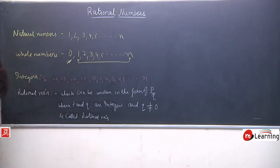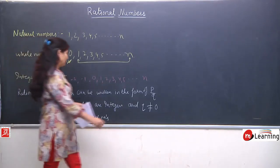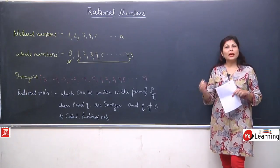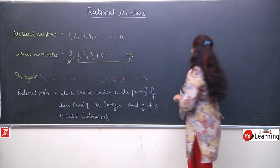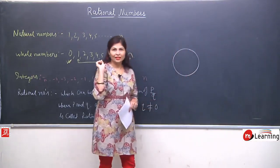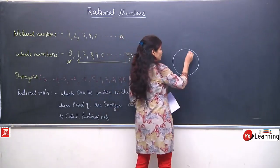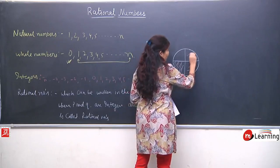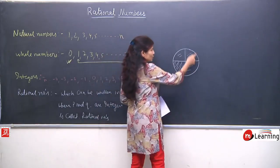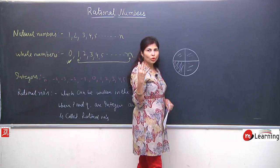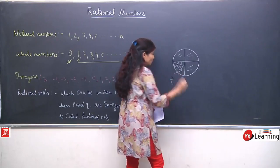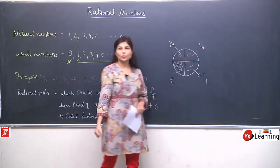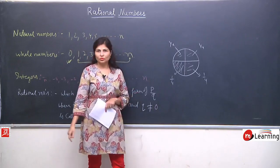Rational numbers are now clear — any number in numerator upon denominator form. Again, since from our childhood we have been learning this. For example, we have a pizza and I want to divide it into four equal parts. This is one part, second, third and fourth. This is one pizza divided into four equal parts. So each part equals one upon four.